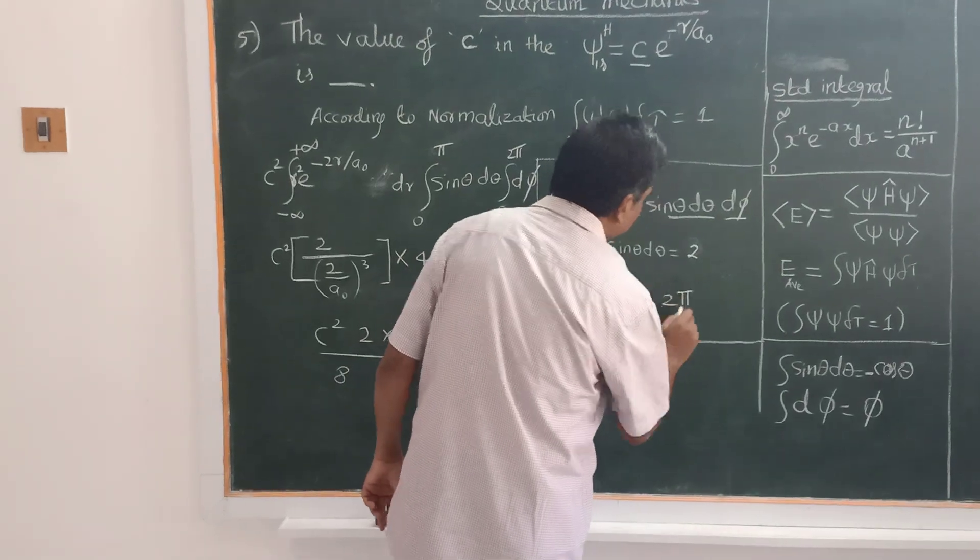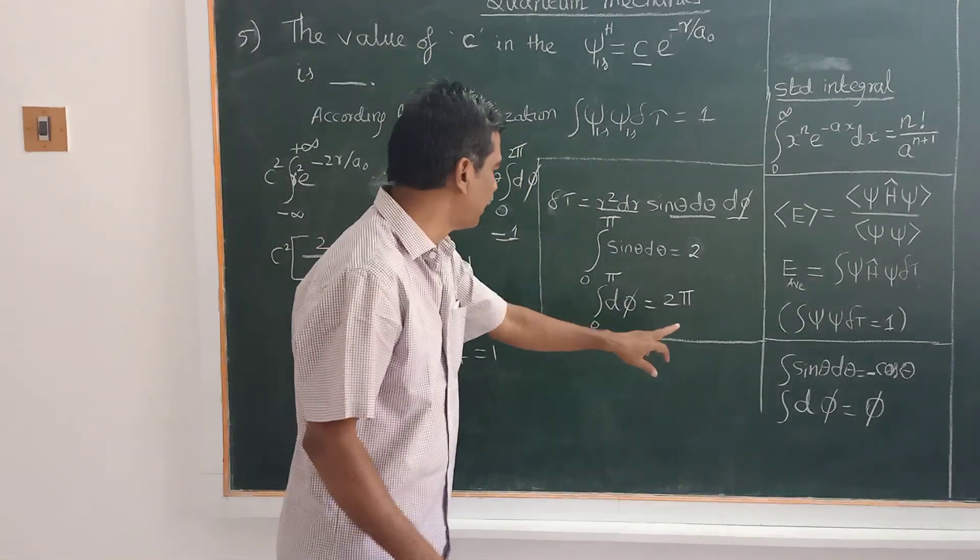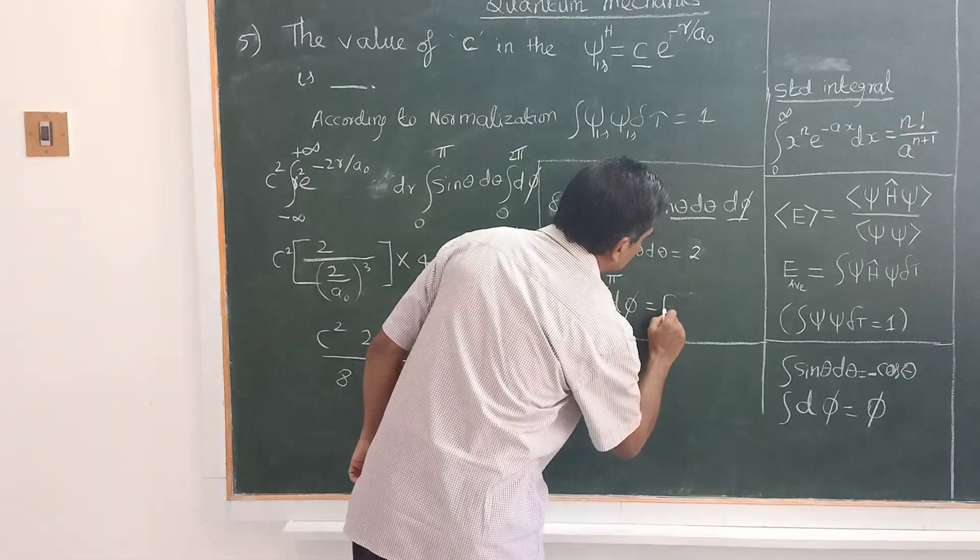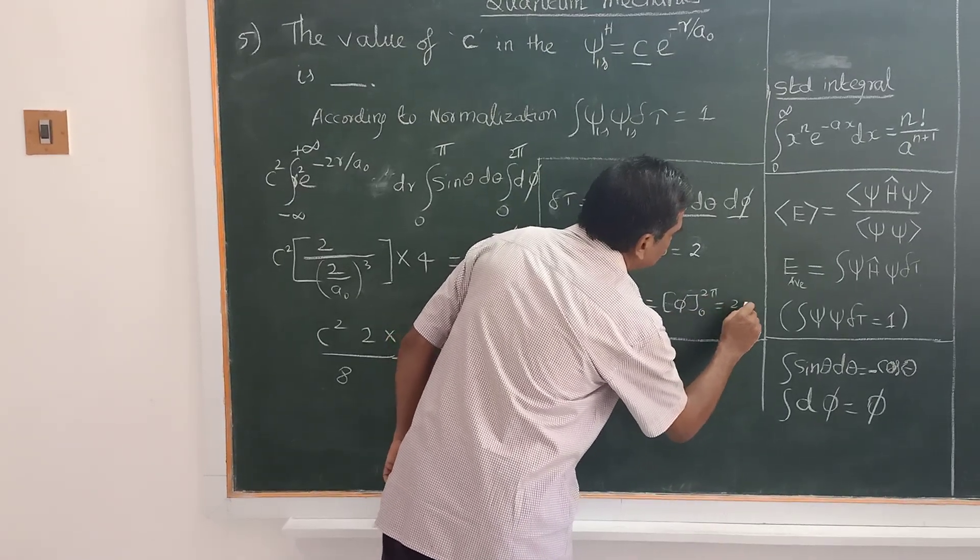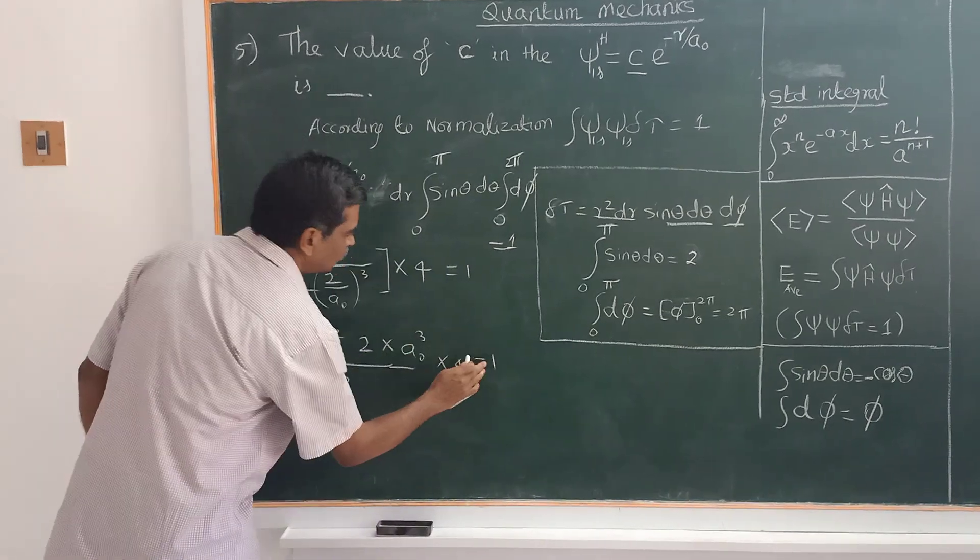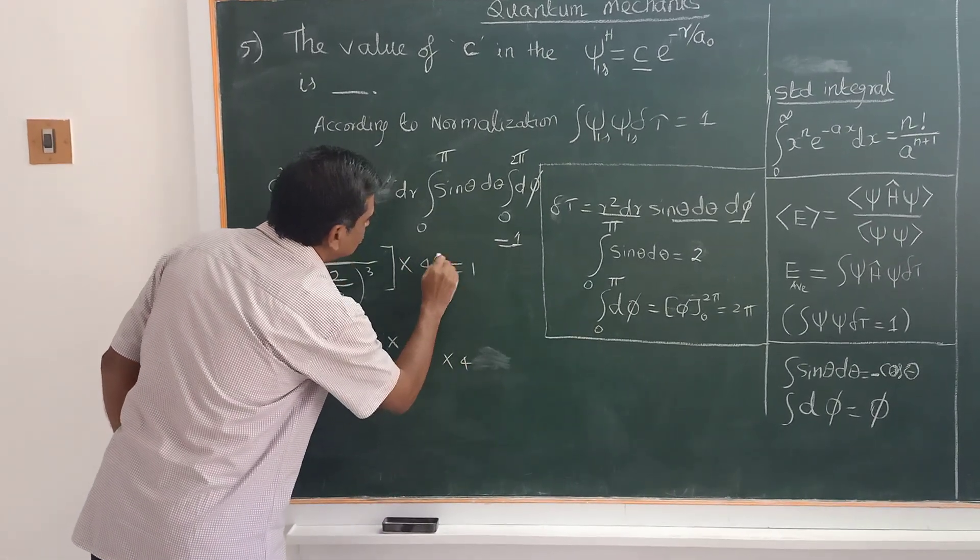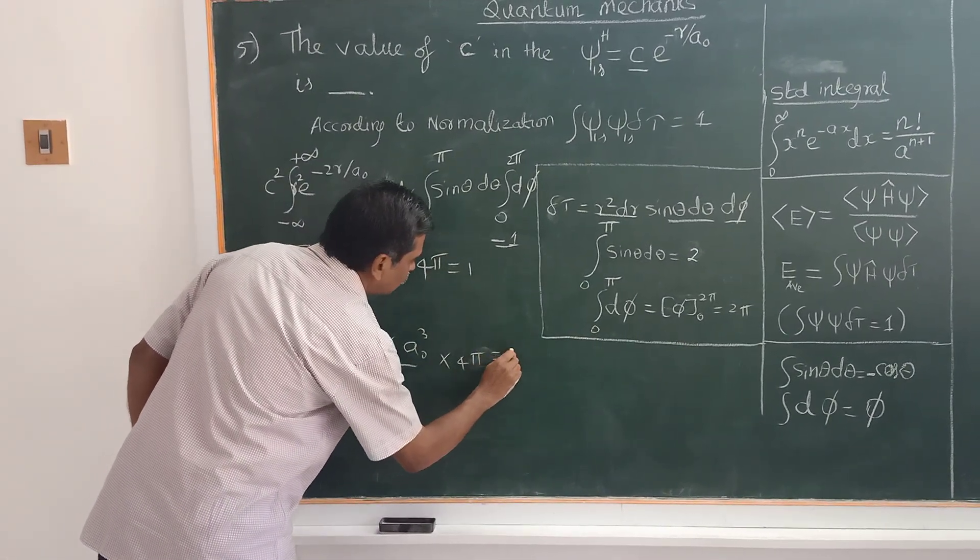This is 2 pi. The integral from 0 to 2 pi gives 2 pi, therefore you have 4 pi equal to 1.